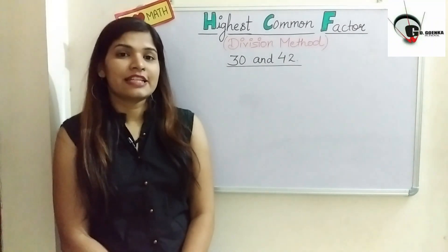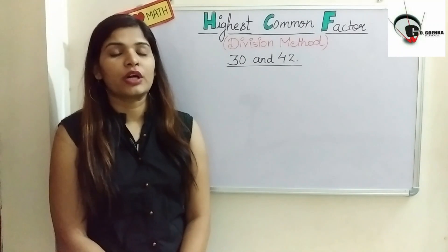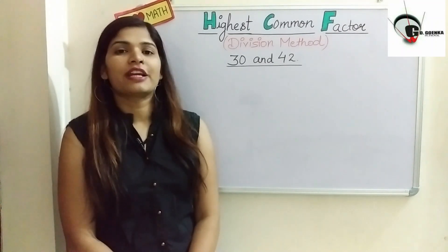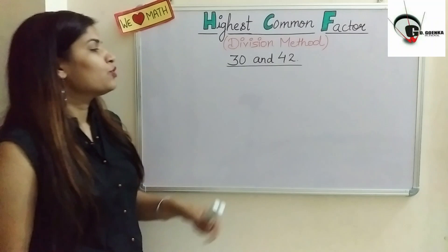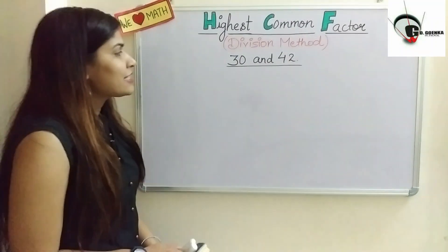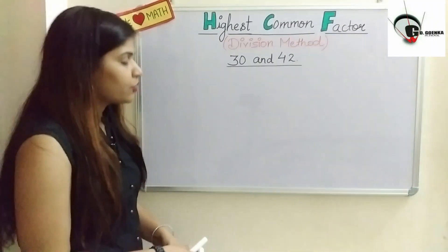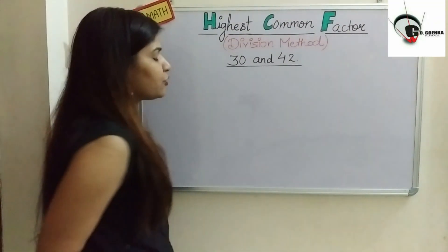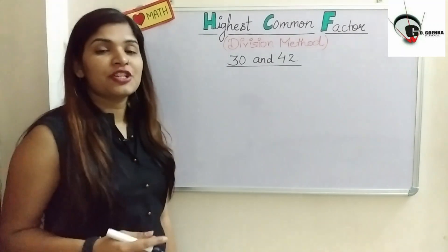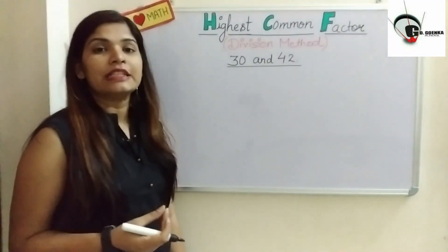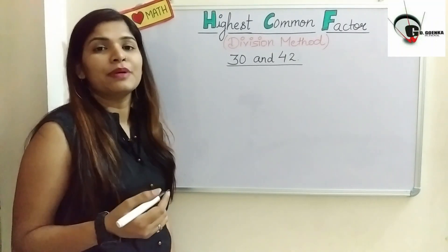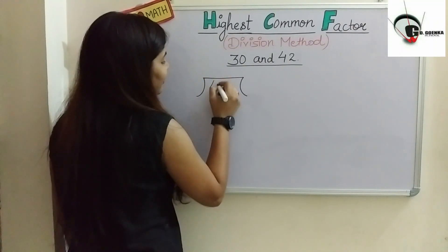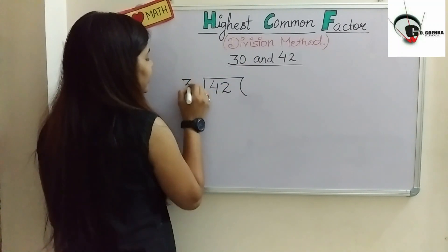This is sometimes also known as Euclid's algorithm, because it was devised by the Greek mathematician Euclid. So let us see how to find the HCF by Euclid's algorithm or long division method. For that I have taken two numbers: 30 and 42. The first step is to find out the larger number. The larger number, 42, will be the dividend, and the smaller number, 30, will be the divisor, just as in simple division.